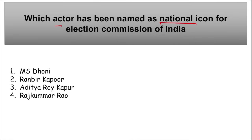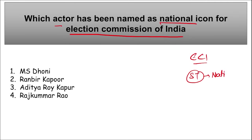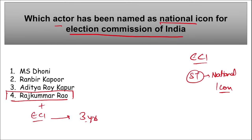Actor Rajkumar Rao has been named as the national icon for voter awareness and education by the Election Commission of India, entering into a three-year agreement. Earlier, the Election Commission of India had appointed Sachin Tendulkar as the national icon to promote voter awareness. Rajkumar Rao started his acting career in 2010 and won the Best Actor award at the National Film Awards in 2014.